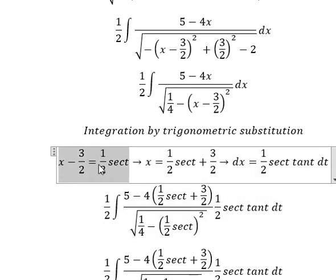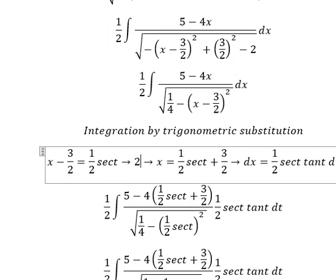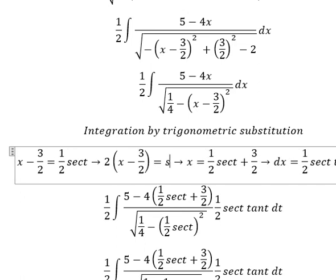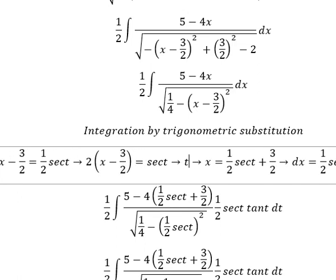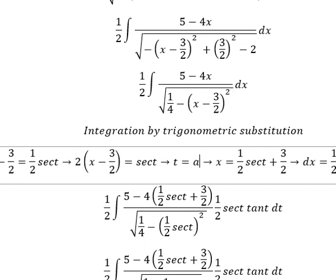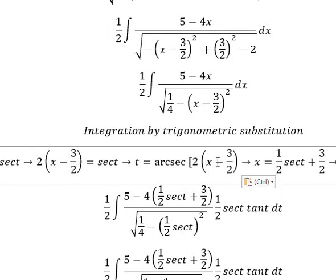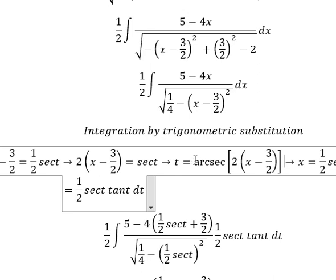For t, we divide both sides by 1 over 2, or multiply by 2. So we get 2x minus 3 over 2 equals secant of t. About t, that equals arc secant of this one. So we put this one to replace t.